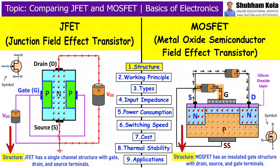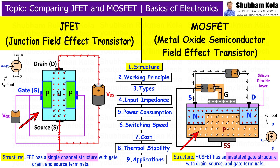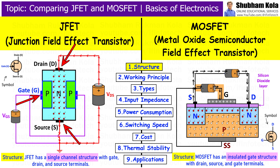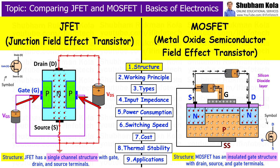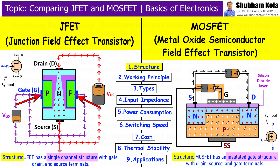First is structure. Starting with the structure, JFET and MOSFET have different designs that determine how they work and where they are used. In JFET, there are three terminals: source, gate, and drain. The gate is reverse biased, meaning that it doesn't allow current to flow directly through it. It only controls the flow of current between the source and drain.